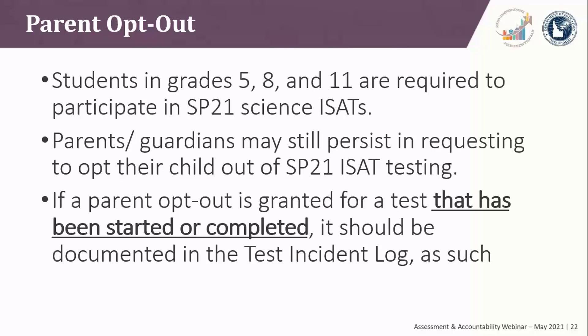Nevertheless, parents and guardians may still persist in requesting an opt-out for their child for Spring 21 summative testing. LEAs and/or school leaders can work with parents to inform them of the importance of gathering student performance data for school year 2021. The LEAs and/or school leaders may then decide to grant the parent's opt-out request. However, the state will not take parent opt-outs into consideration when calculating participation rates — those students remain in the denominator unless they were absent during the entire assessment window due to documented medical reasons.